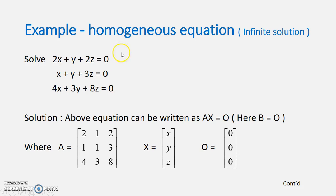Now the second case is infinite solution for homogeneous equation. This is again homogeneous equation you can see zeros which we need to convert into matrix equation form. So this is A matrix of coefficients. This is matrix of unknowns. This is matrix of constants. You can see 2, 1, 4, 1, 1, 3, 2, 3, 8.